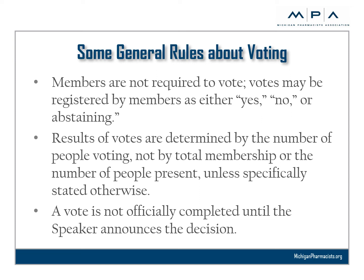Some key points to emphasize on voting: it's important to note that a delegate is not required to vote. Most established agenda items require a simple majority vote, and commonly used motions requiring a two-thirds majority vote for passage would include a suspension of the House Rules or making a special order. The results of votes are determined by the number of people voting, not by the total membership or the number of people present unless specifically stated otherwise. A vote is not officially completed until the Speaker announces the decision.